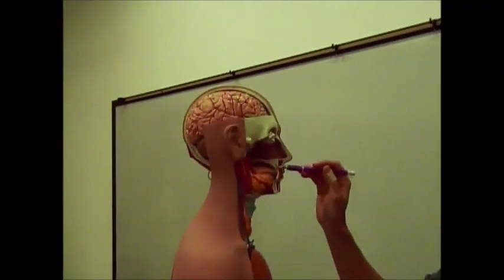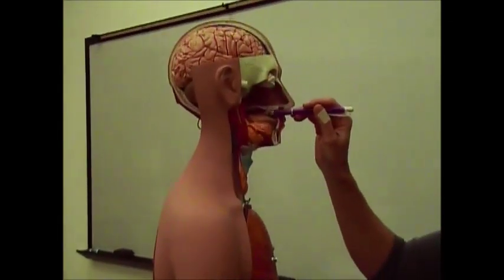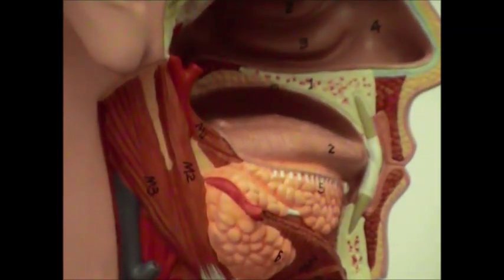And that's pretty much all there is to olfaction. The other chemical sense you have is the sense of taste. And you notice all the little bumps all over your tongue. Those are called papillae. You have three main types of papillae: foliate, circumvallate, and fungiform papillae.